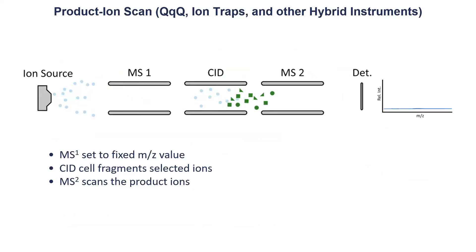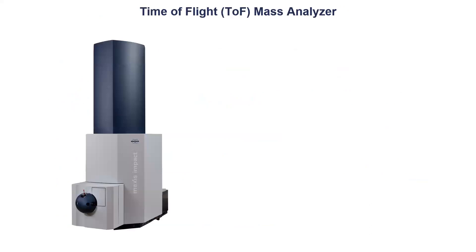Another thing you can also do is use an ion trap. With an ion trap you cannot only monitor one specific mass-to-charge ratio - you can actually scan the whole mass range, which gives you more flexibility.